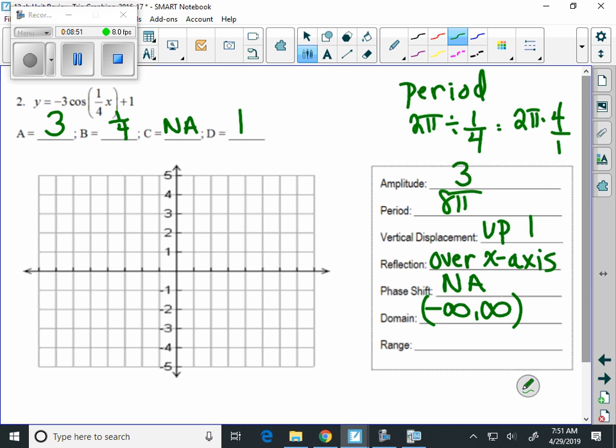Our period is calculated by 2 pi divided by one-fourth, which is 2 pi times 4 over 1, which is 8 pi. Vertical displacement, we're going to go up one. We do not have a phase shift on this particular graph. Our domain for sine and cosine remains the same. And we'll look at what our range is momentarily. But what I want to put in here first is our vertical displacement. And what we said is that it's up one.